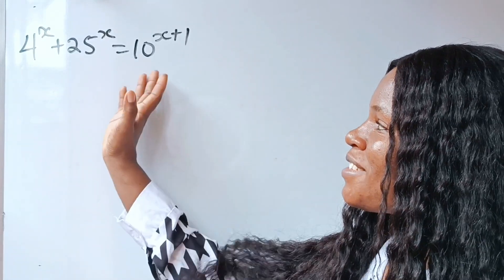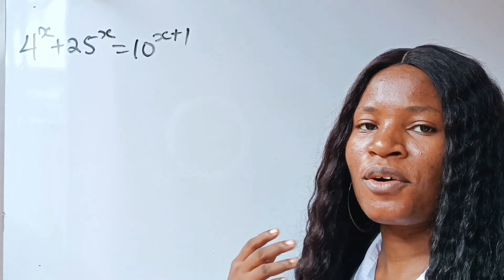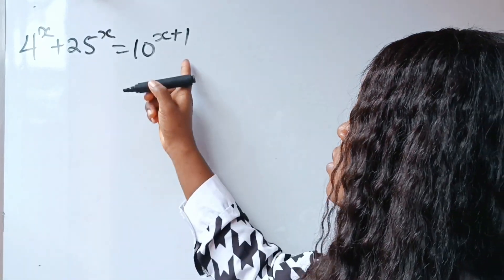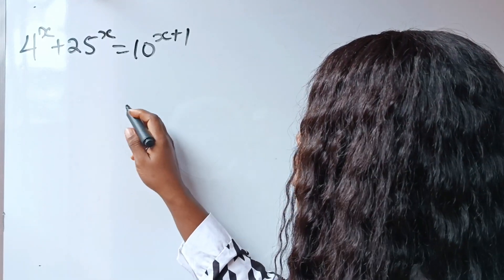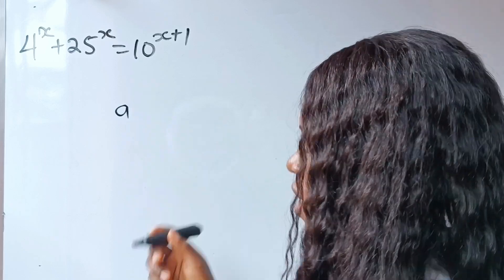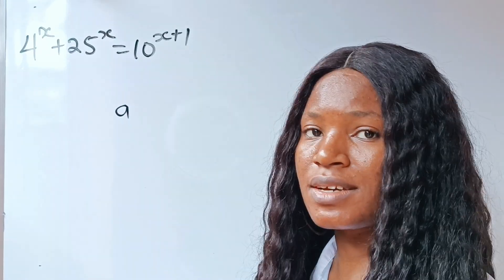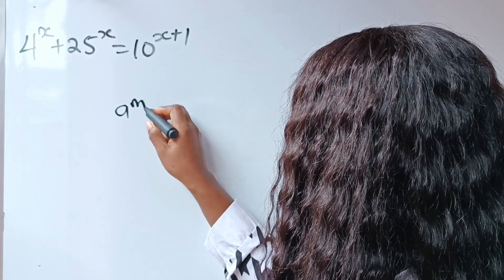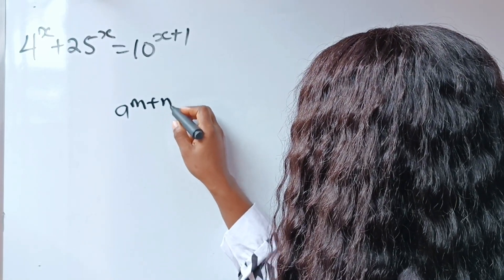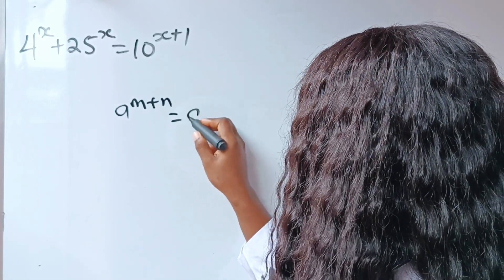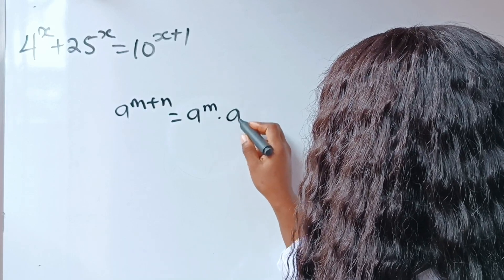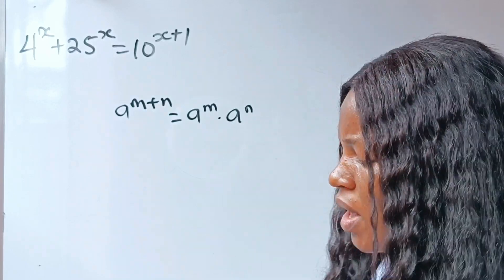Hi! Let's solve for the value of x. First, we are going to remember or recall the law of exponents that states that a to the power of m plus n is equal to a to the power of m multiplied by a to the power of n.